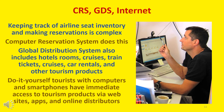Keeping track of airline seat inventory and making reservations on multiple airlines throughout the world is a complex task. A computer reservation system, CRS, performs that task. Add in access to hotel rooms, cruises, train tickets, car rentals, and other tourism products, and now you have a global distribution system, GDS. Travel agencies utilize both of these systems to serve their clients quickly and efficiently. And thanks to the internet, do-it-yourself tourists with computers and smartphones enjoy immediate access to many of the tourism products they need during their travels via company websites, apps, and online distributors.